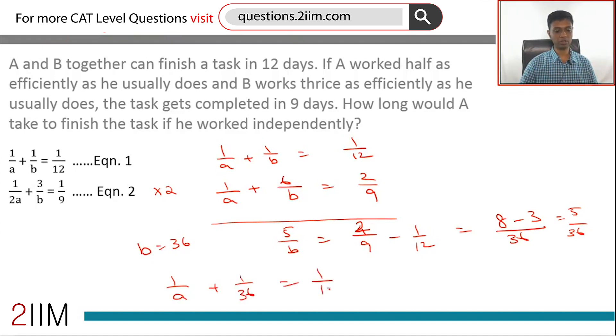1/a + 1/36 = 1/12, so a = 18. If A worked alone, A would take 18 days to finish the task. Simple enough question.